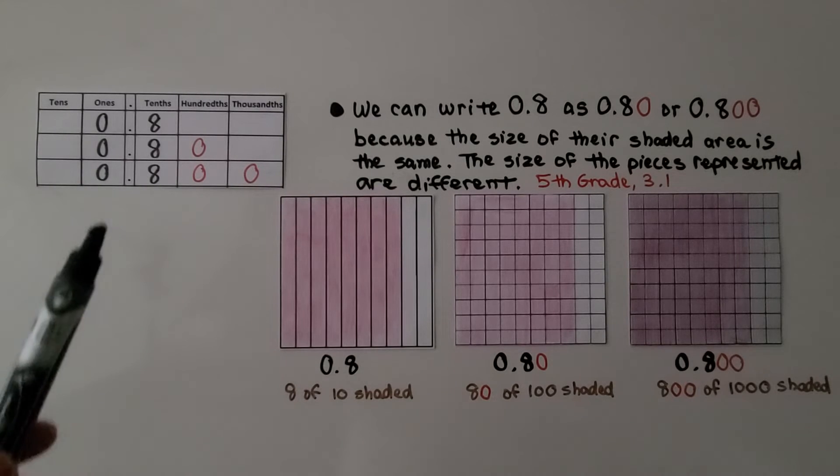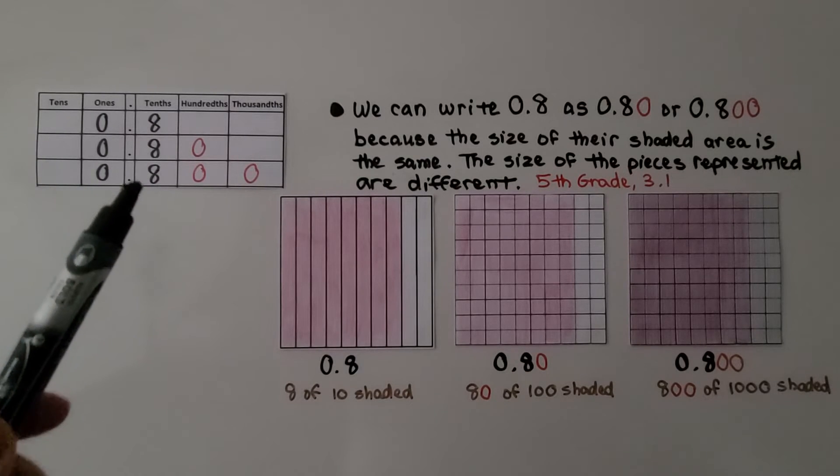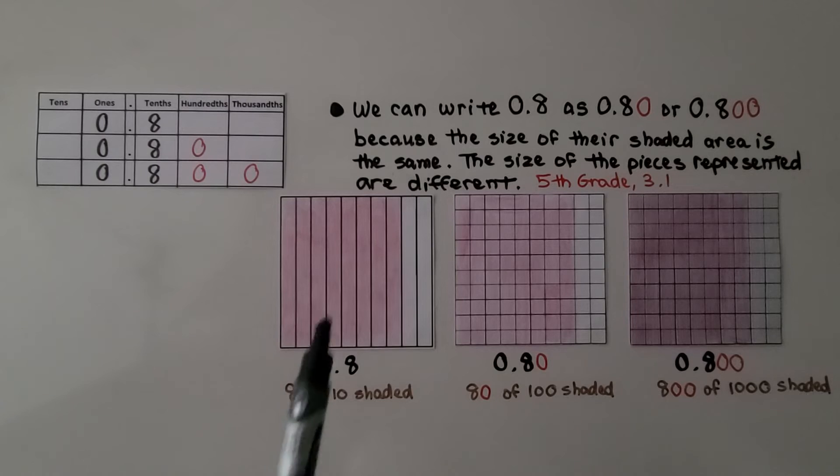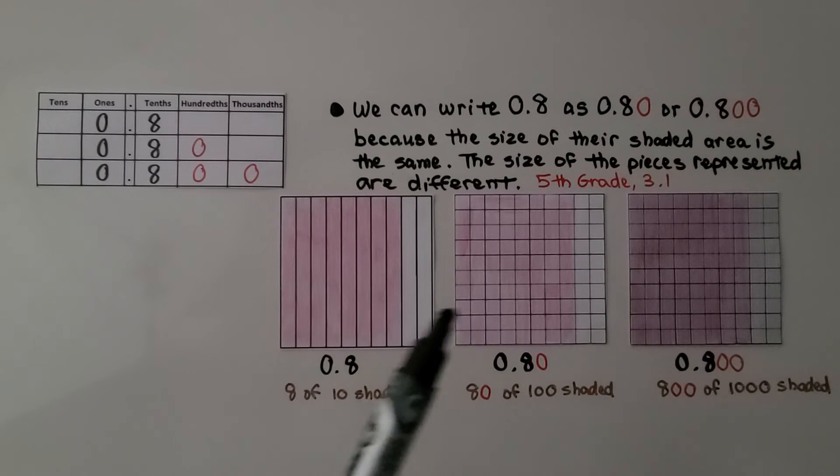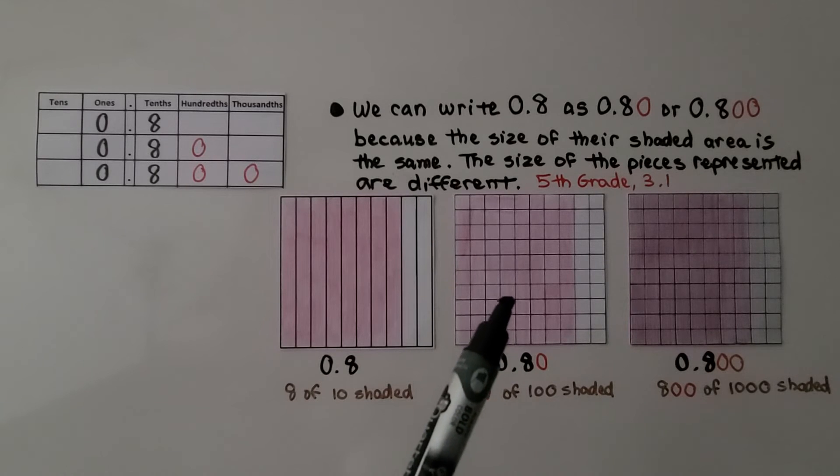We can write 8 tenths as 80 hundredths or 800 thousandths because the size of their shaded area is the same. The size of the pieces that are represented are different. These each represent a tenth. But because these pieces are split into more parts, it represents 80 hundredths.